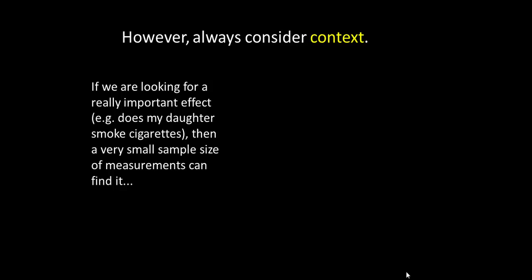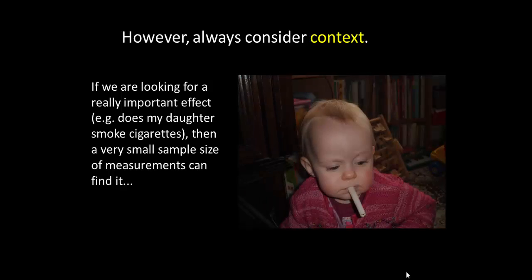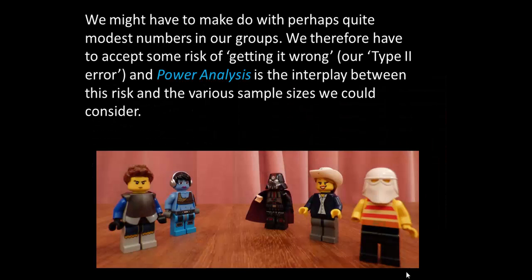It's always important to consider context. So for example, if we're looking for a really important effect, for example does my daughter Lizzie smoke cigarettes, then a very small sample size of measurements can find it. In this case, one would do it. Now in general, however, due to cost, available time amongst other factors, we might have to make it do with perhaps quite modest numbers in our groups, and we therefore have to accept some risk of getting it wrong, our type 2 error. And power analysis is that subtle interplay between this risk and the various sample sizes that we might consider in order to make our research a success.